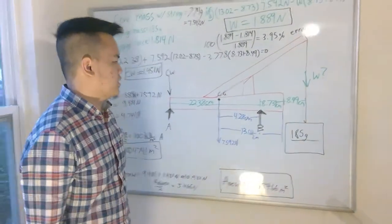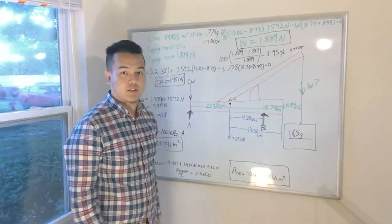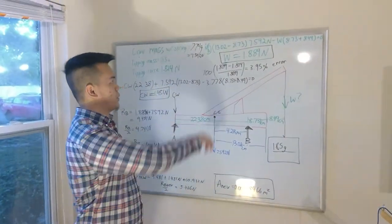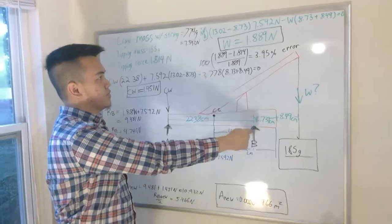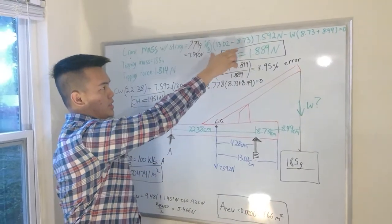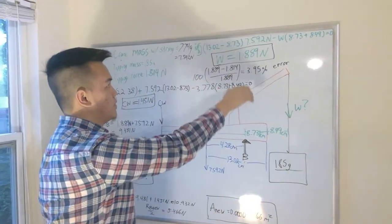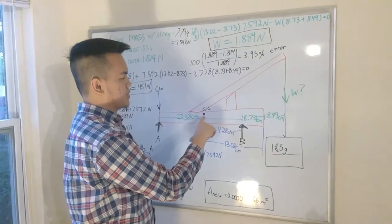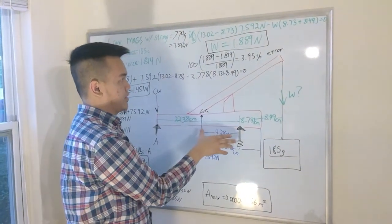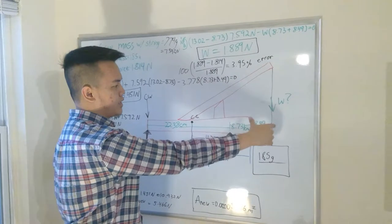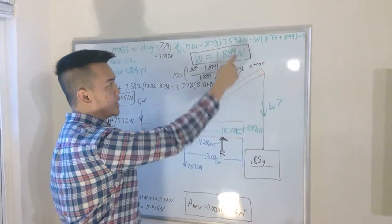All righty then. So defining the theoretical weight to tip, we would do the moment at b right here. You take the distance from the center of gravity, multiply the distance minus the weight times that distance from b.